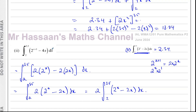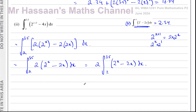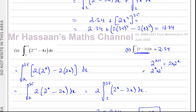So the answer is 2 times 2.34, which gives 4.68. That's the answer to part c(ii). The key is algebraic manipulation to express the new integral as a multiple or combination of the answer from part b.